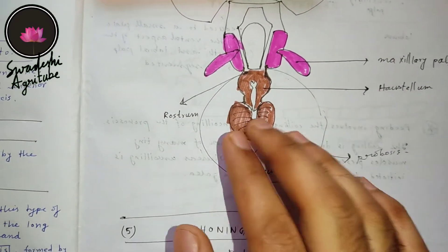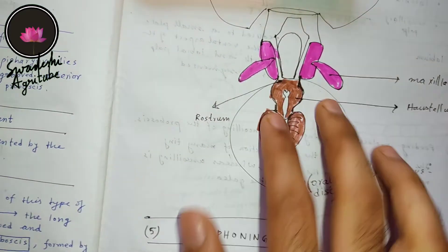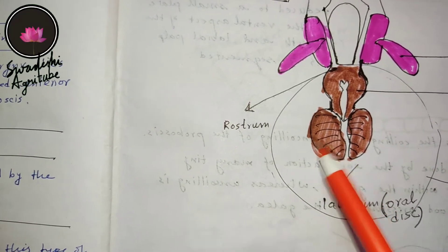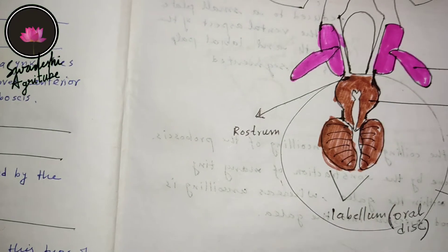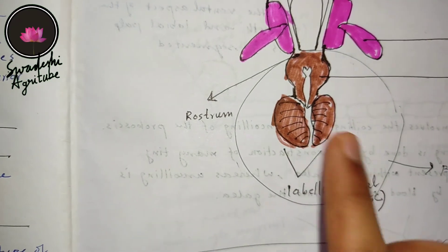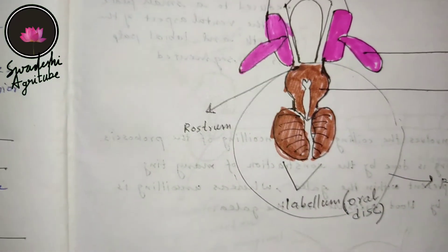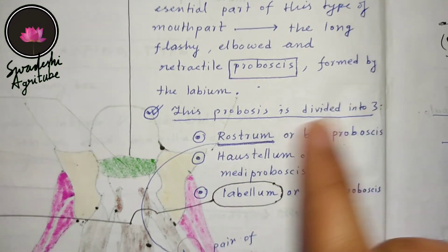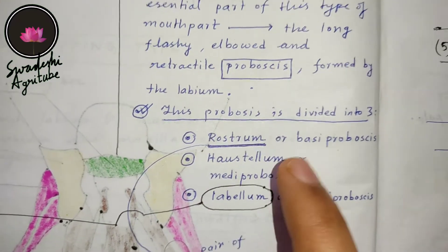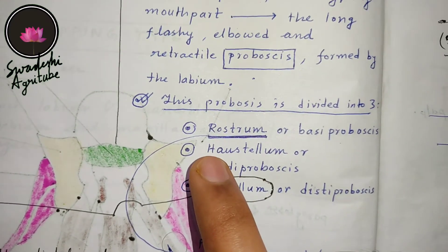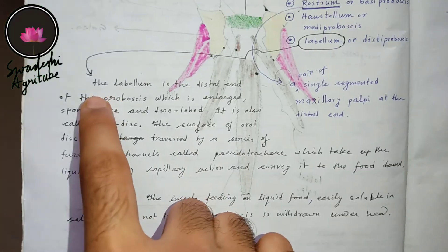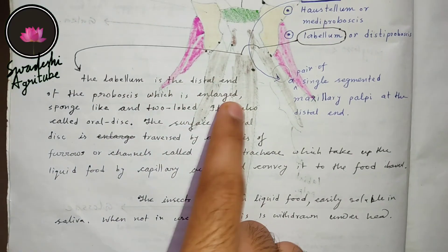The end portion of the proboscis is called the labellum — a sponge-like structure with two lobes. These structures are called pseudotrachea, and food is taken through the pseudotrachea by capillary action, then it goes to the food channel. Insects that take liquid food have the haustellum, which is why they are also called haustellate.